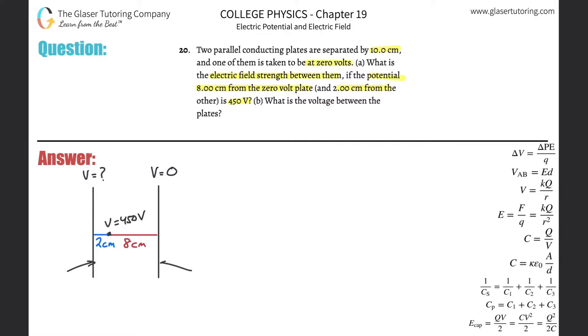They told us that the voltage at one of the plates we're going to assume to be zero. We do not know the voltage at the other plate. We do know though that the voltage about 8 centimeters from the zero plate is going to be 450 volts. So the question now is asking what's the electric field strength between the two plates.